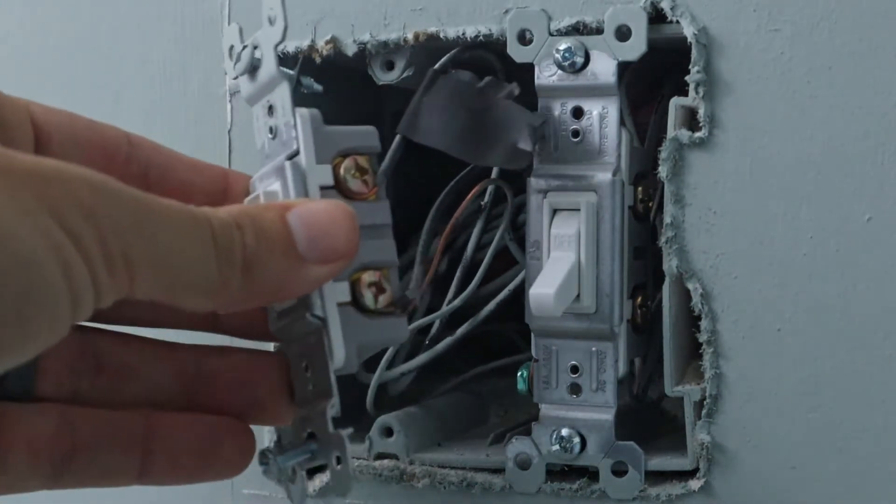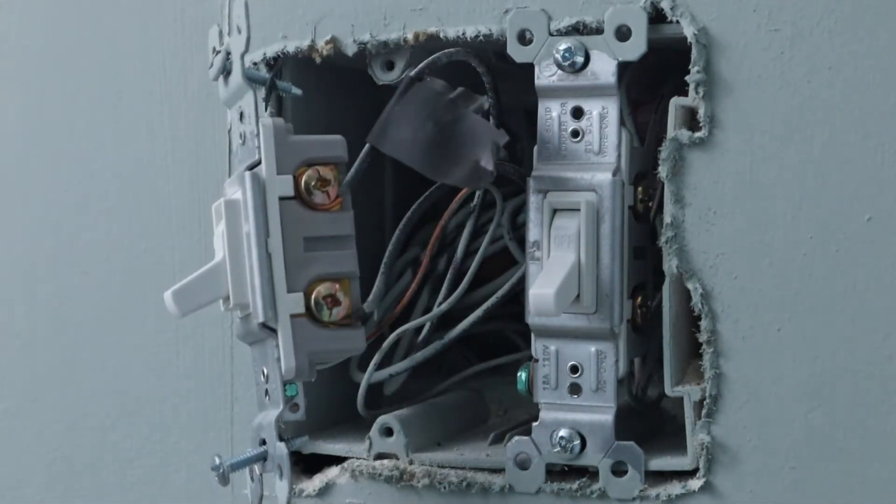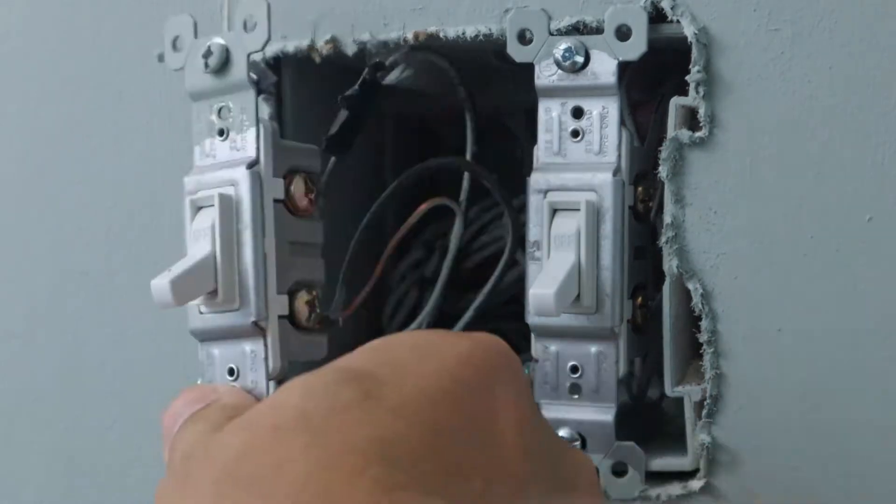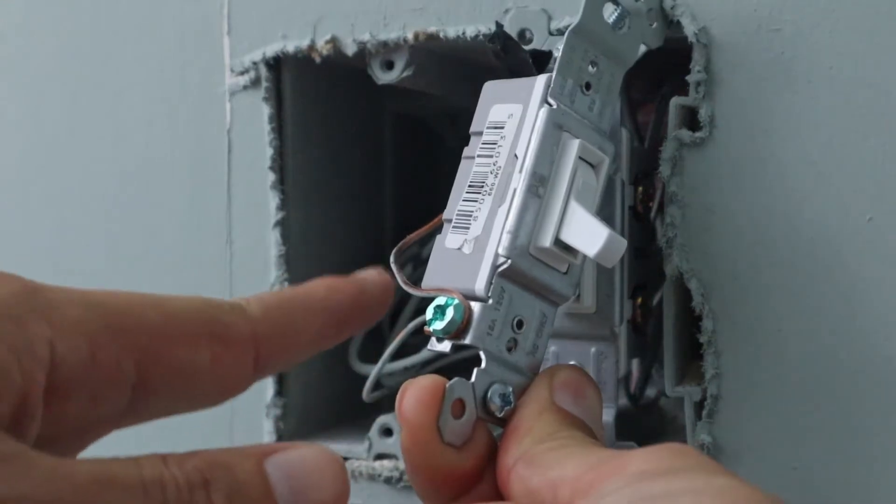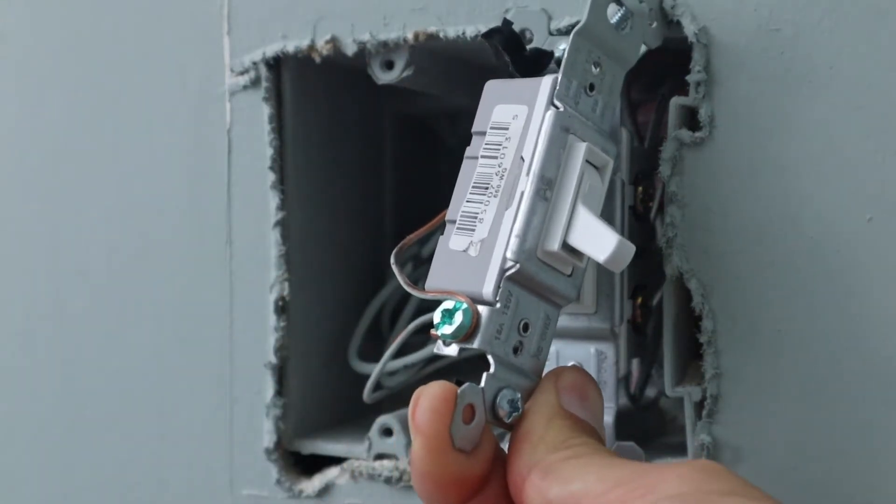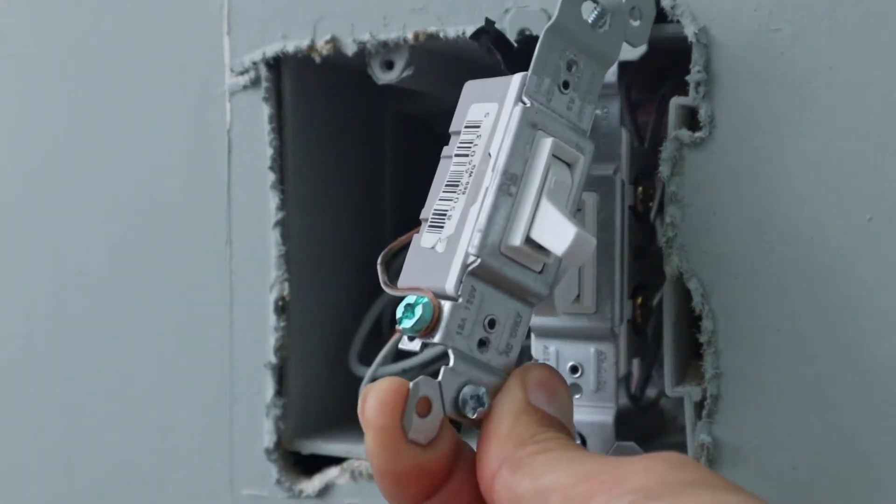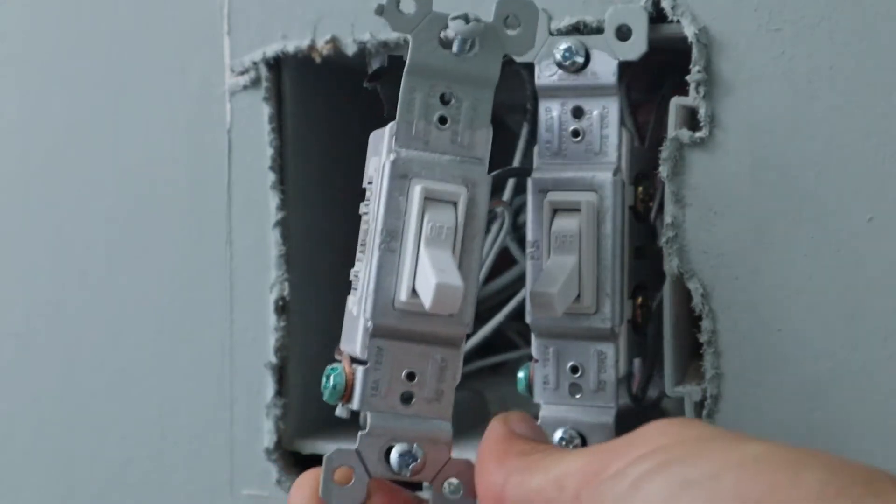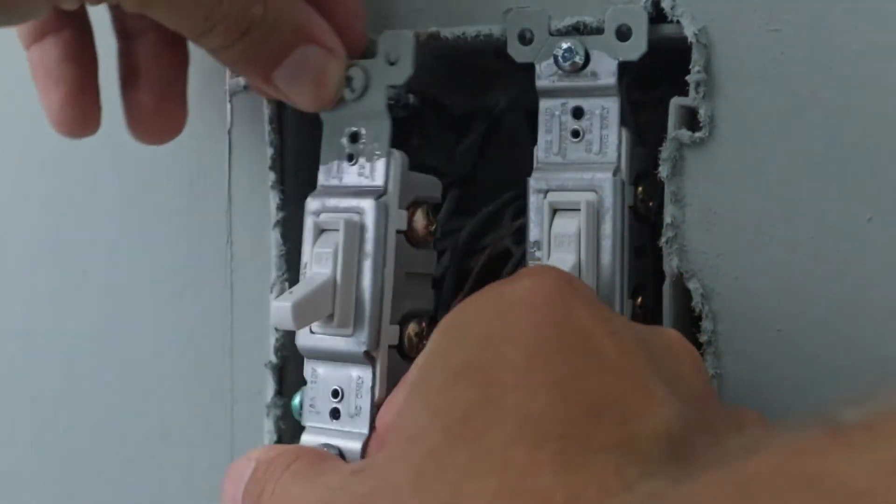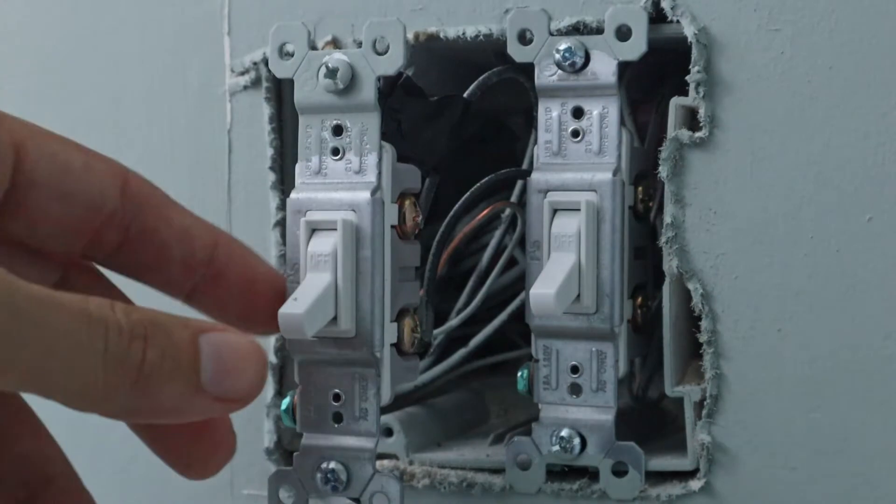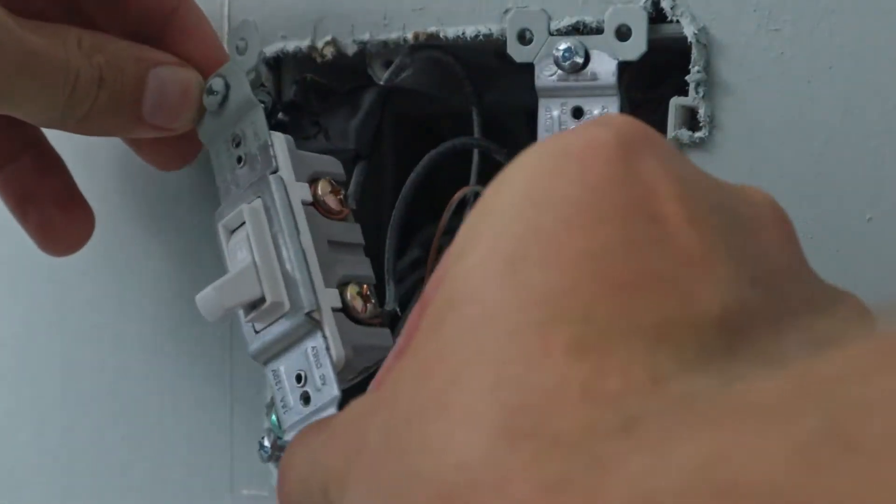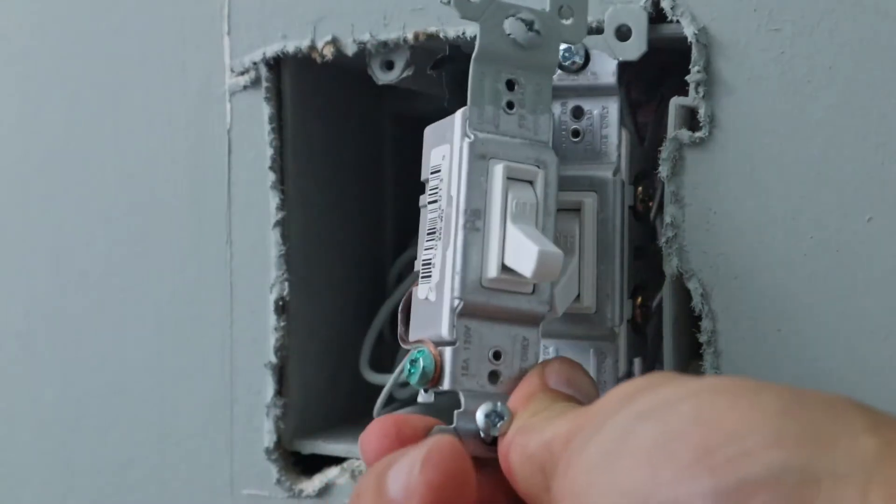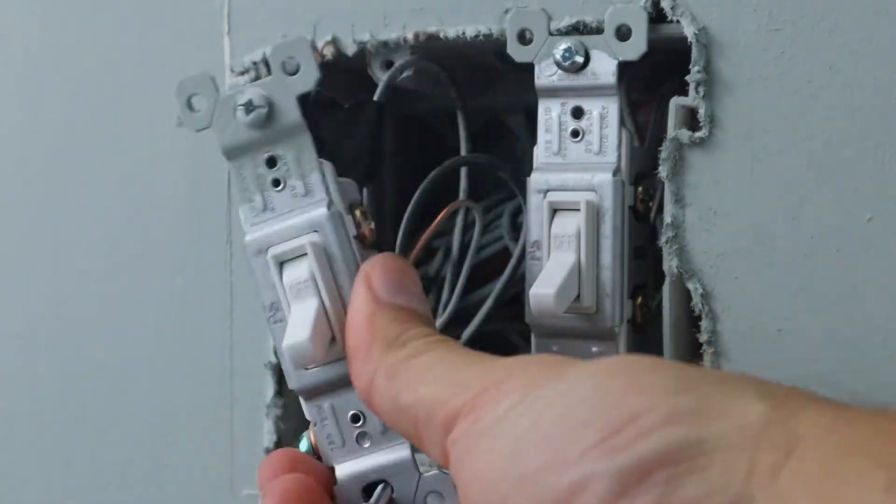Over here on the left side of the switch where this green screw is, this bare copper wire is of course the ground wire and we're going to need to use that as well. Now this particular smart fan switch requires a neutral wire, and as you can see, which is pretty standard on light switches, there's no white wire attached to it. You just got your two hots here and your ground wire.